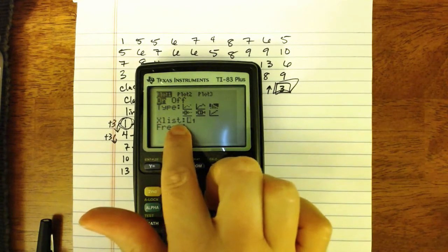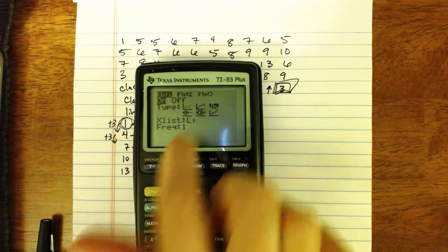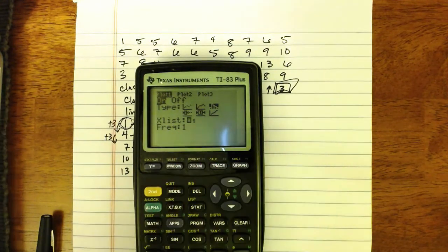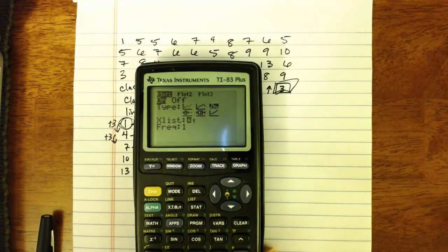Then for X list, you need to use the list in which your data are stored, mine are in list 1, so that's fine. And in general, frequency should be set to 1, so that's also fine.